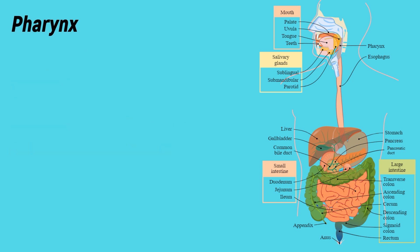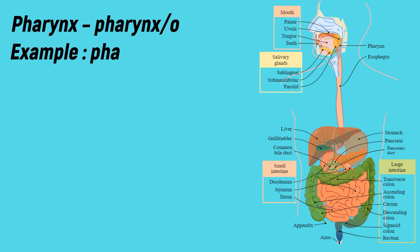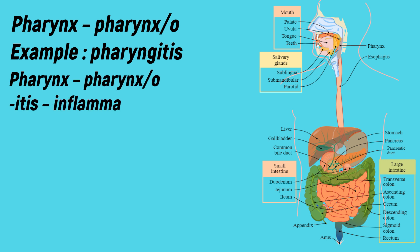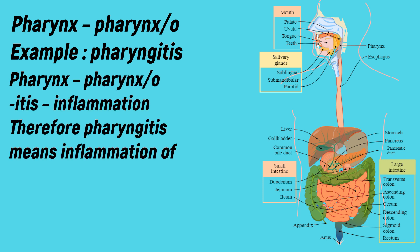Pharynx: the medical term for pharynx is 'pharyngo'. Example: pharyngitis. We already know -itis means inflammation. Therefore, pharyngitis means inflammation of the pharynx.